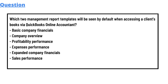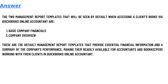So we have some options here: Basic Company Financials, Company Overview, Profitability Performance, Expanded Company Financials, and Sales Performance. The answer to the question is: the two management report templates that will be seen by default when assessing a client's books via QuickBooks Online Accountant are Basic Company Financials and Company Overview.